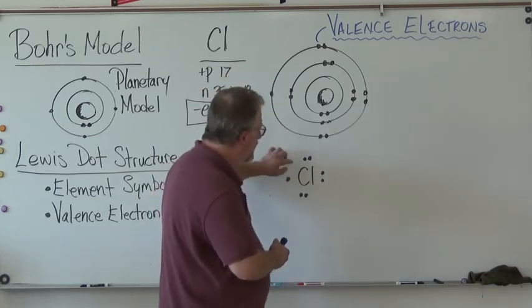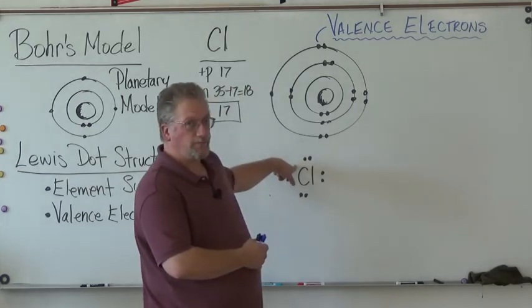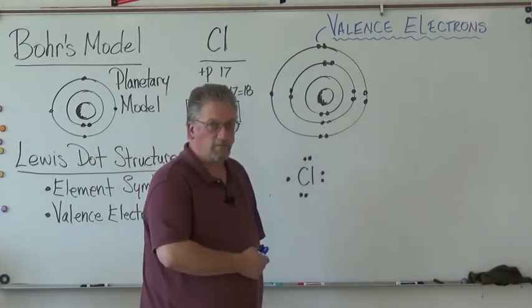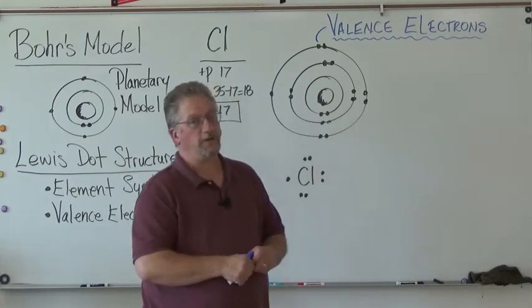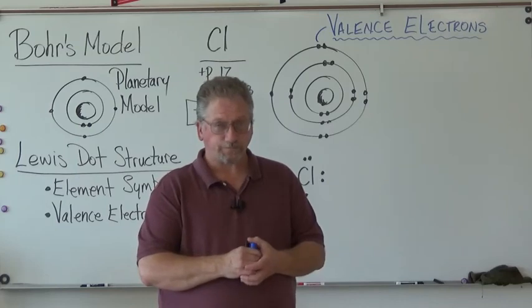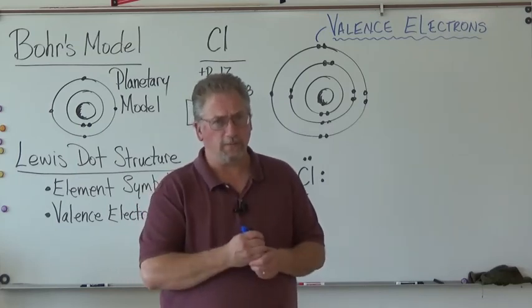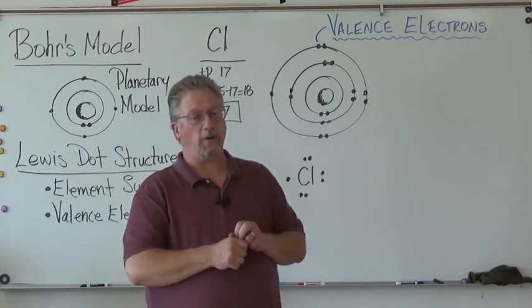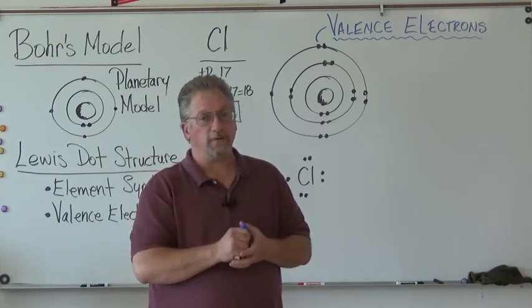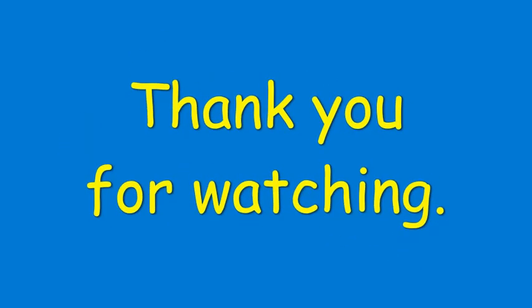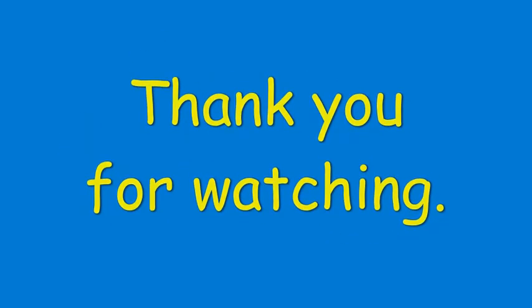Because every time you want to draw a Lewis dot structure, right now we're drawing a Bohr's model first. But there's actually something that you already figured out on that periodic table you've filled out with all those Bohr's models on there. There's something new that we're going to add that's actually already on your periodic table. So stay tuned or tune in to the next video and I'll tell you exactly what those special numbers are.